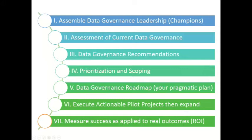Once you have those recommendations — and these are aspirational recommendations of all kinds — you're going to do a prioritization and scoping. We want to do all these things, but we can't do all of them at once. What are we going to do first? What's the rollout of each one? What's the return on this? That becomes your data governance roadmap and your pragmatic plan.